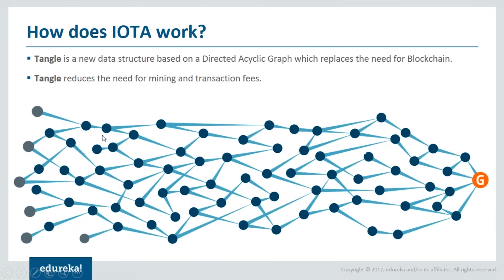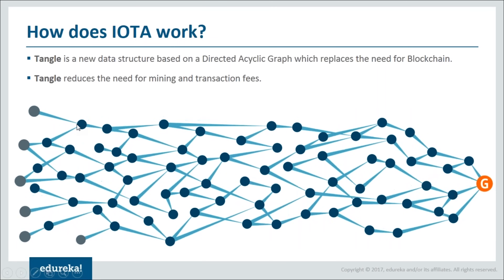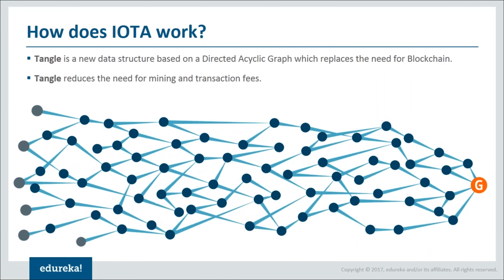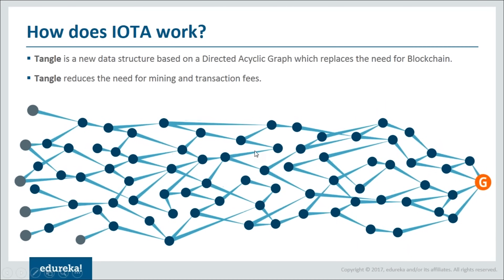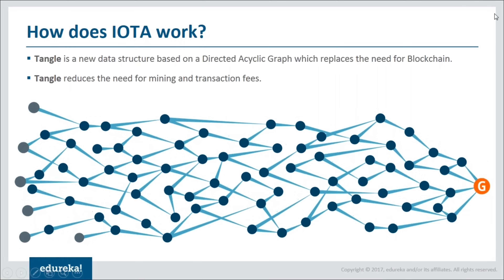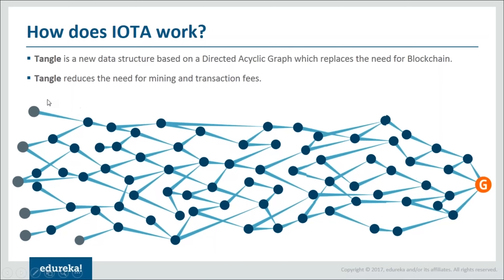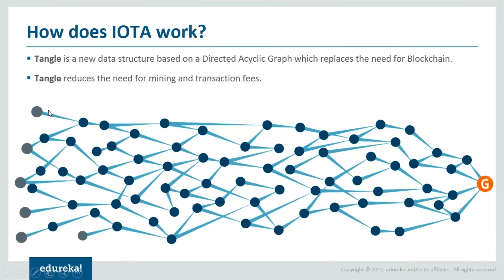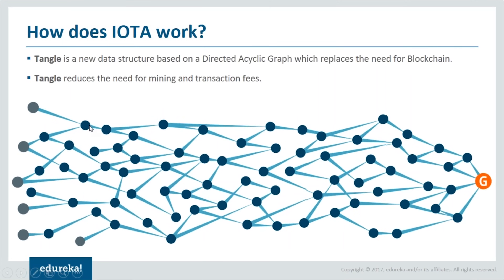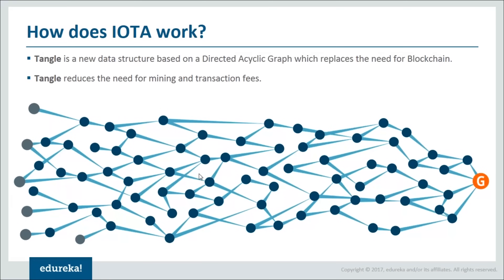Each circle in the Tangle is a transaction, also called a site. Each transaction is linked to at least two other transactions — the initial transactions excluded. These two linked sites validate the transaction, and the direction specifies connectivity between them. The edges you see are the tips — new transactions yet to be confirmed or validated. Any site not linked to two other transactions is an unconfirmed transaction.